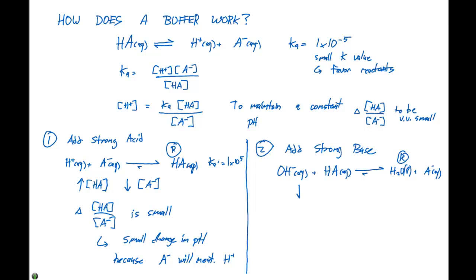So what happens here is we're gonna see a drop in concentration of HA. And at the same time, we're gonna see a rise in concentration of A minus. So in this case, our delta HA divided by A minus is also small. And that means we're gonna see a small change in pH because HA will neutralize OH minus.